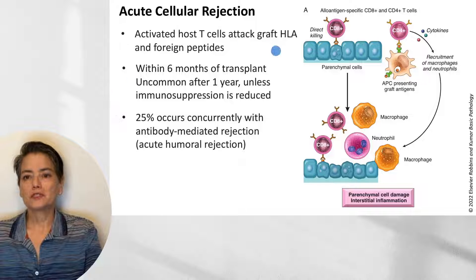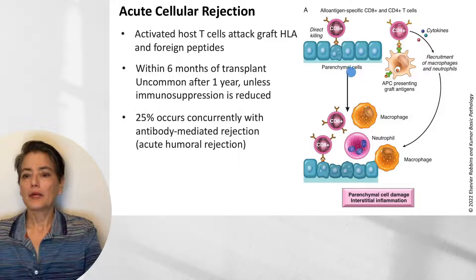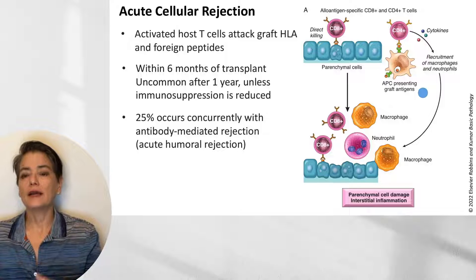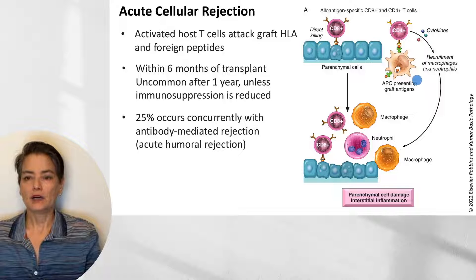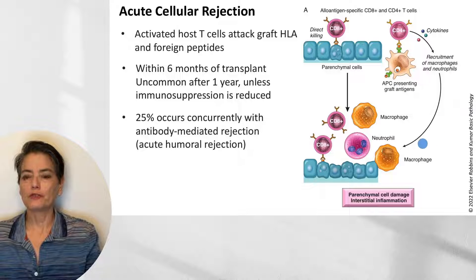CD8-positive T cells recognize parenchymal cells and directly kill them. CD4-positive T cells respond to antigen presenting cells that are indirectly presenting graft antigens — the host APCs pick up graft antigens. Macrophages and neutrophils are recruited, attacking the parenchymal cells and causing parenchymal cell damage and interstitial inflammation.